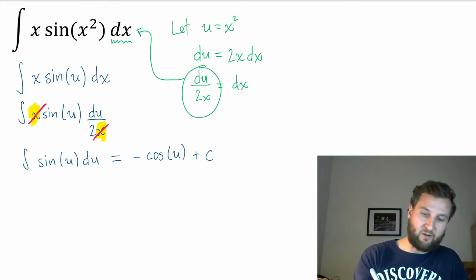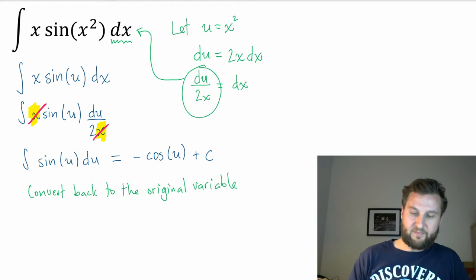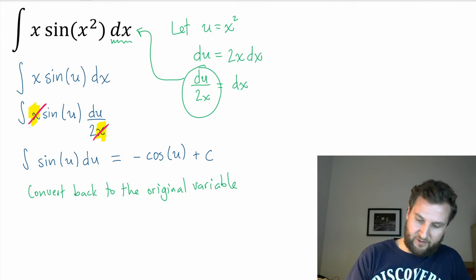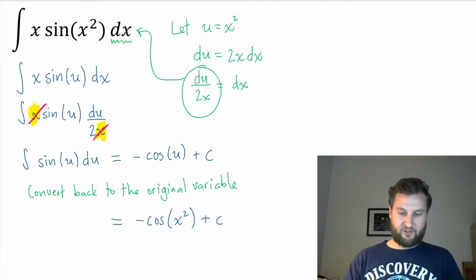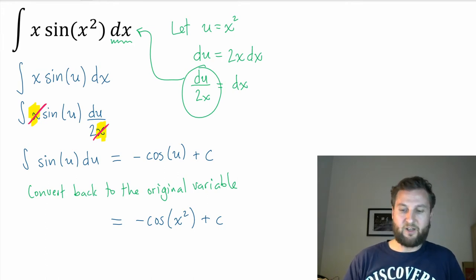Make sure you get that negative sign right: negative cos u plus c. Now I want to convert back to the original variable. I had u equals x squared, so rewriting one more time gives: minus cos(x²) plus c. That doesn't look too tricky — minus cosine of x squared plus c.